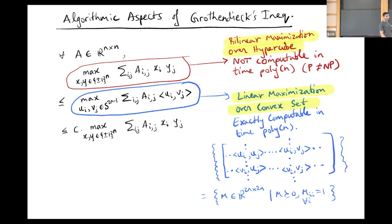Let's talk about the algorithmic interpretation. It turns out that bilinear maximization over the hypercube is not computable in polynomial time exactly, assuming P not equal to NP. On the other hand, this high dimensional vector relaxation is exactly computable in polynomial time.